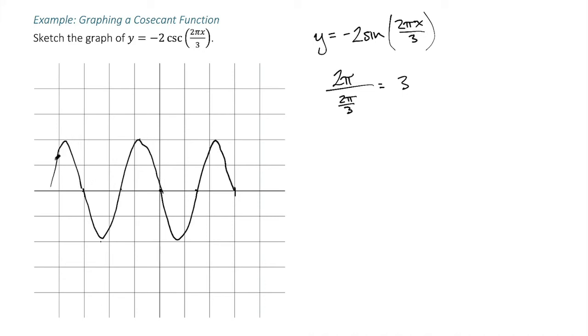And we can then create our asymptotes based on where this thing is 0. And so we can create our asymptotes everywhere it crosses the axis.